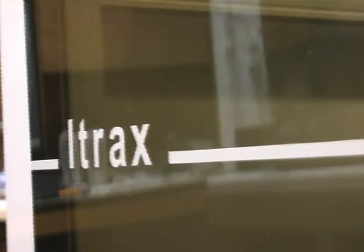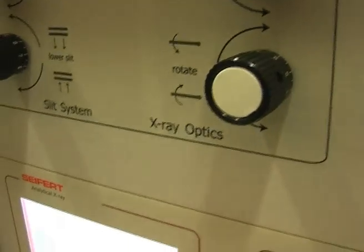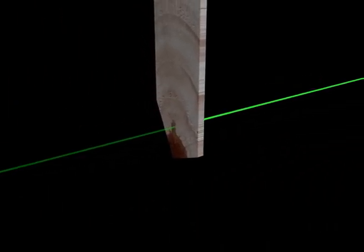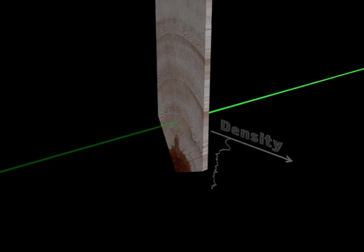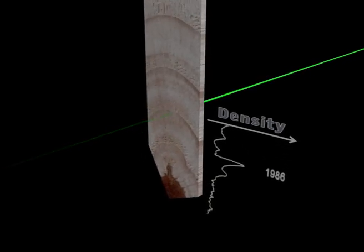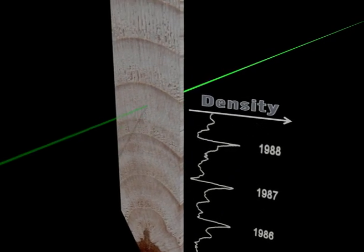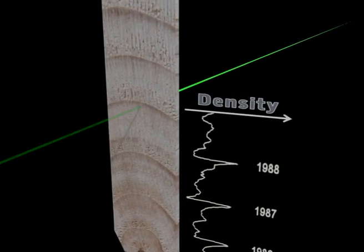This is an X-ray densitometer, used to make measurements of the density of the wood in the different rings. These thin strips of wood contain the rings from the middle of the tree to the bark, representing the whole life of the tree. The denser wood absorbs more of the X-rays, just like bones do in a medical X-ray. In this machine, the beam of X-rays is very fine, like a needle, so it can take very precise measurements of small areas.